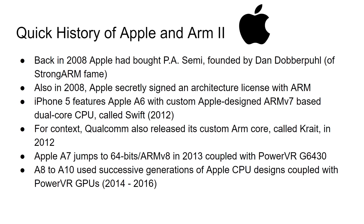We see the fruits of that in 2012 — about four years, which is about right for developing a brand new processor from nothing. The iPhone 5 features the Apple A6, which has a custom-designed ARMv7-based dual-core CPU called Swift. For context, Qualcomm also released its custom ARMv7 core called Krait in 2012. But then the real thing that changed everything was the next generation — the A7 — which jumps to 64-bit and ARMv8 in 2013, catching Qualcomm, Samsung, and the whole Android market by surprise.